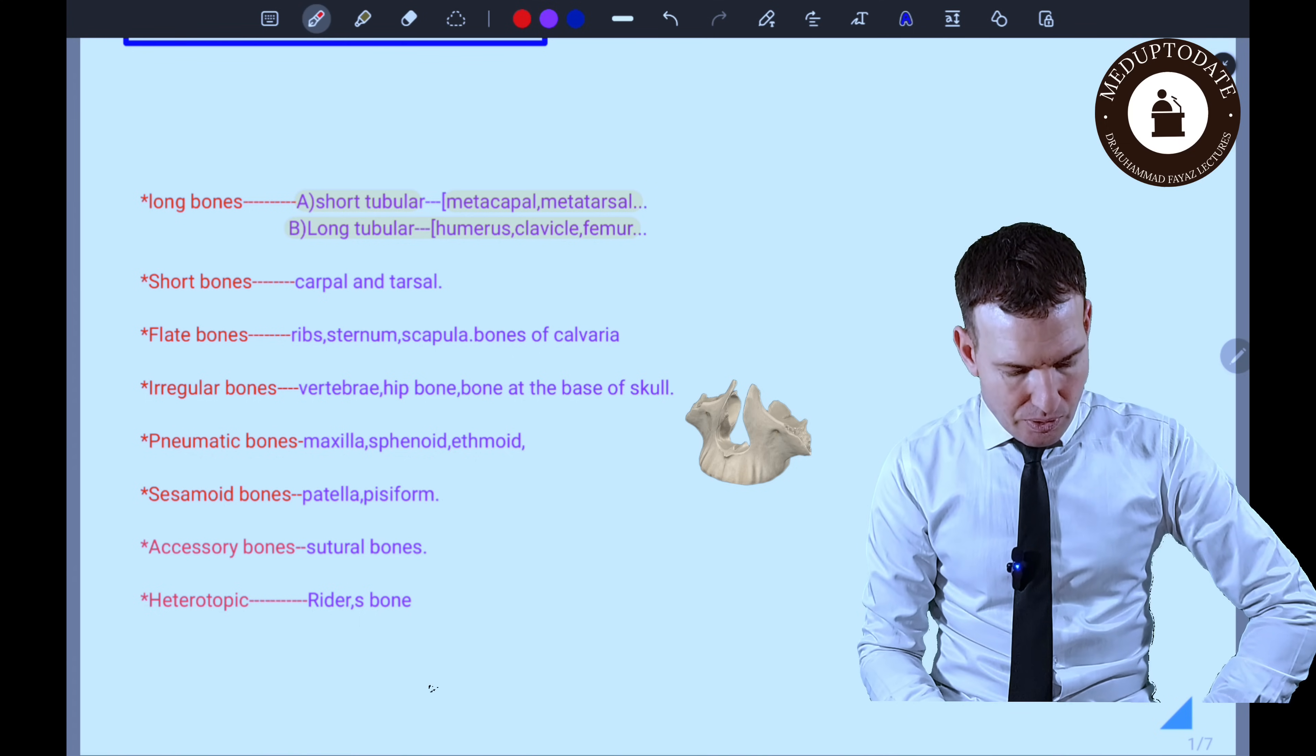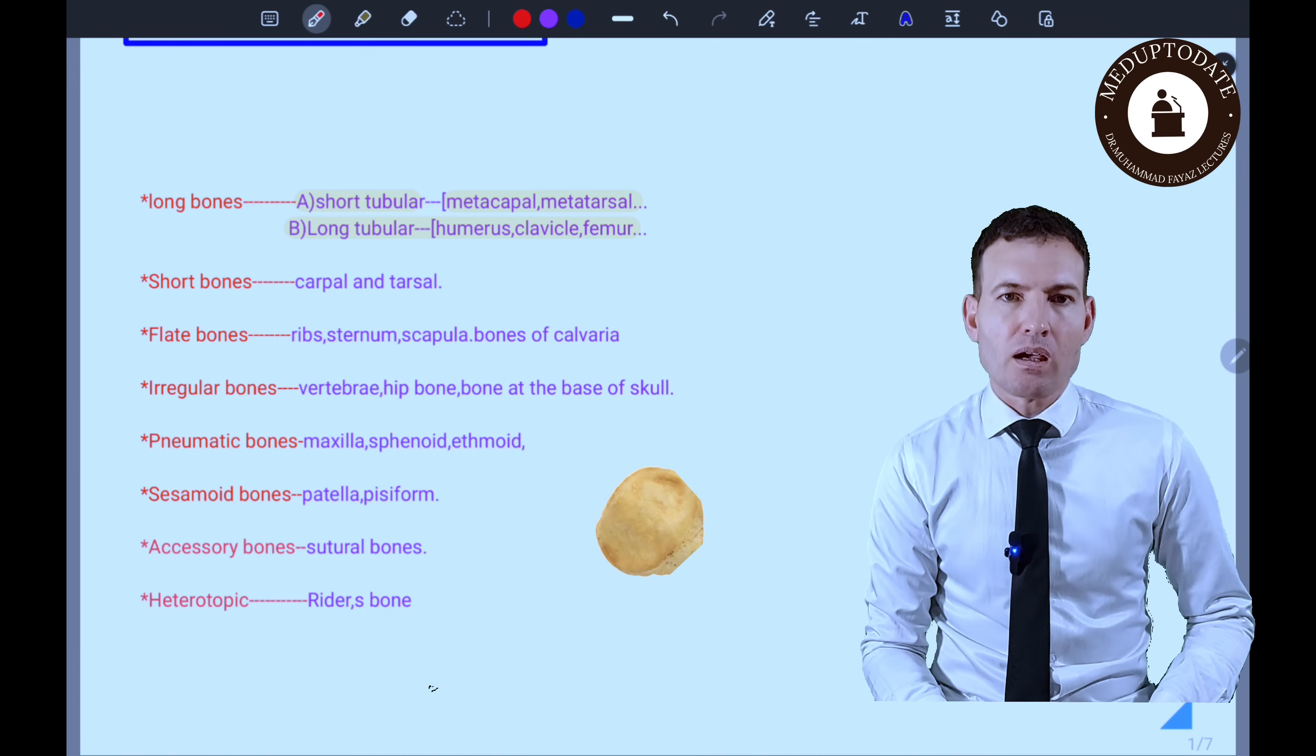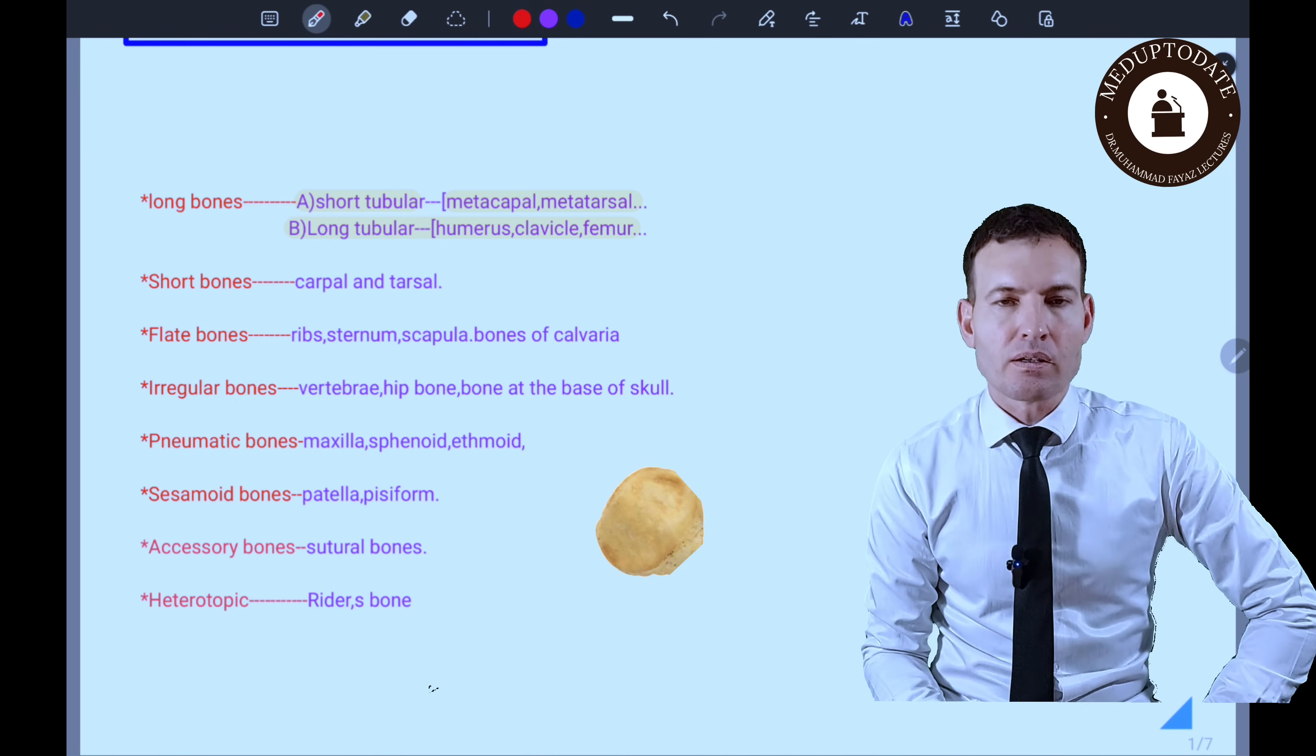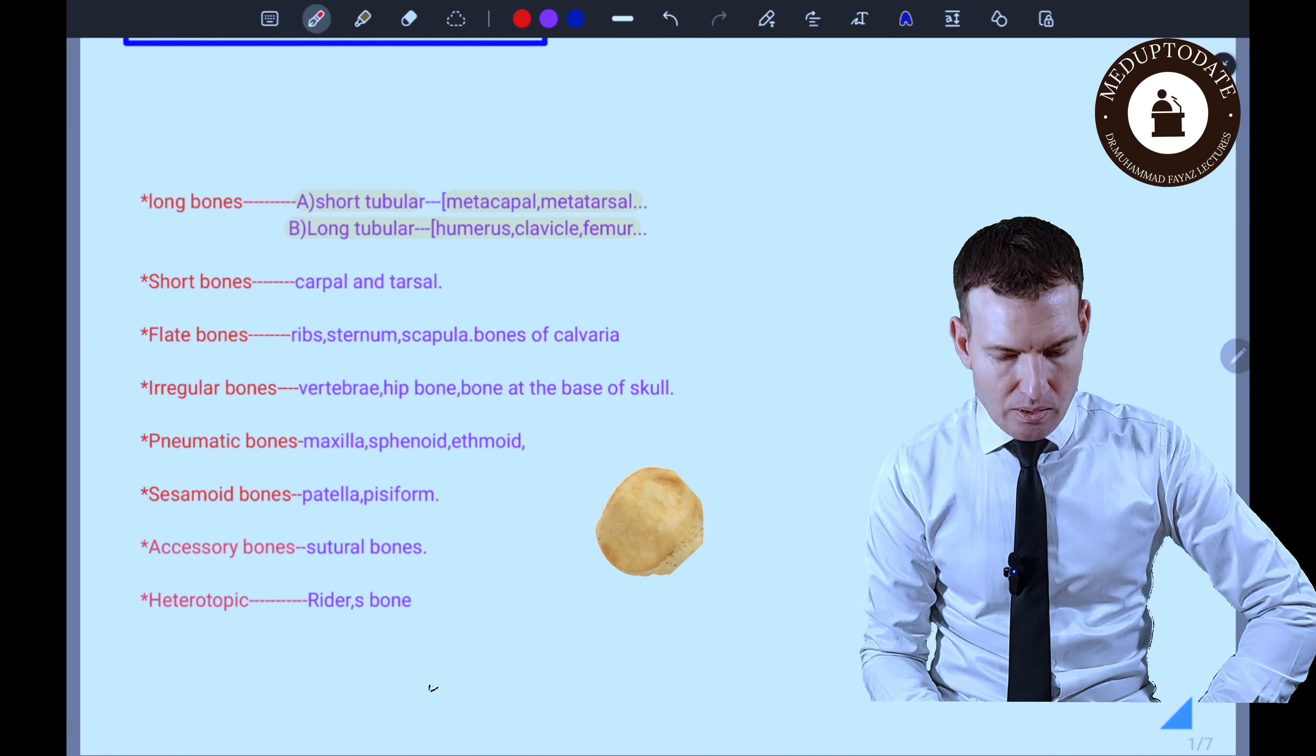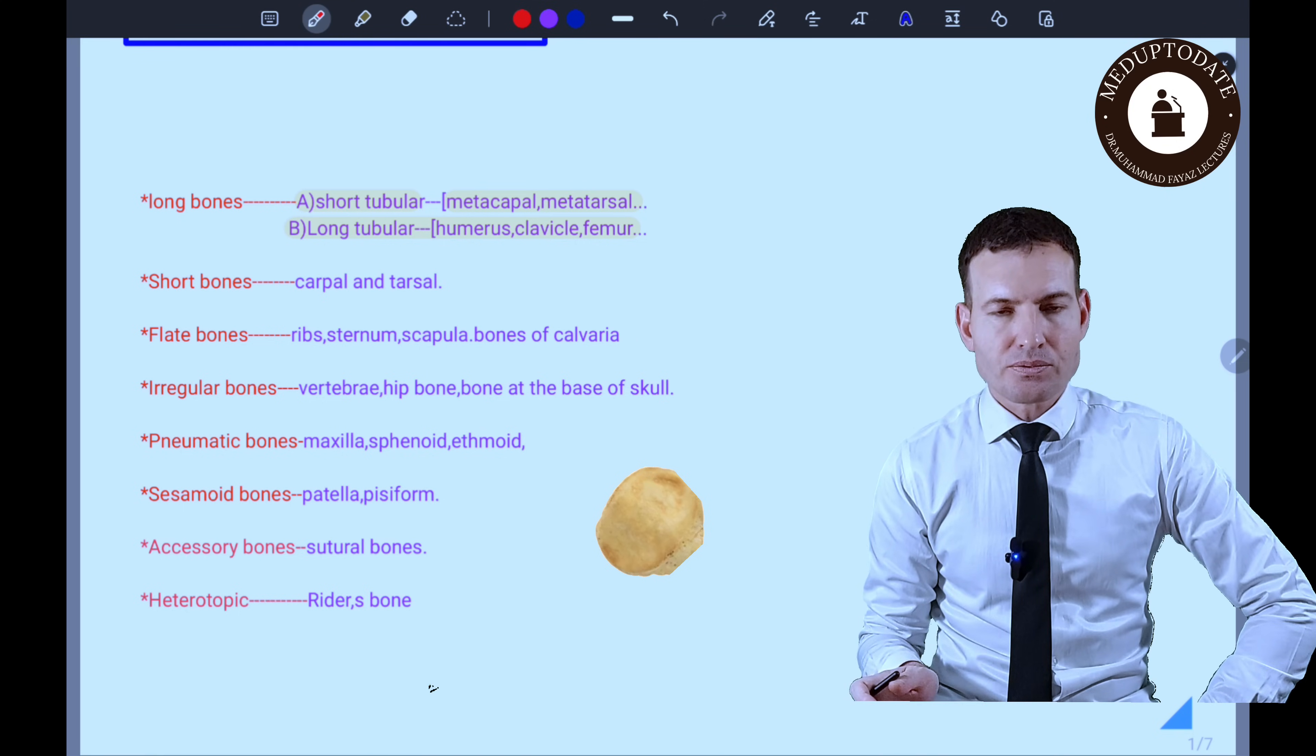Then we have sesamoid bones. Sesamoid bones usually occur in the tendon, for example the patella. It reduces tension in the tendon and muscle and friction as well.